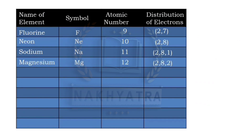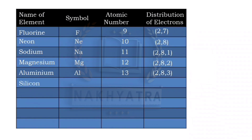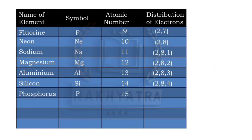Aluminium has atomic number 13 with distribution 2,8,3 — two in the first cell, eight in the second, and three in the third. Silicon has atomic number 14 with distribution 2,8,4. Phosphorus has atomic number 15 with distribution 2,8,5 — two in the first cell, eight in the second, and five in the third cell.